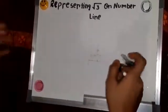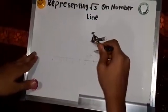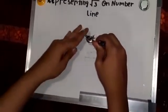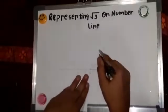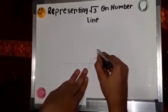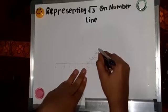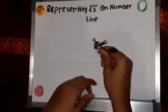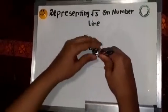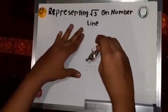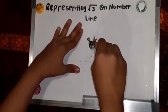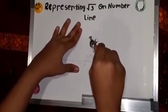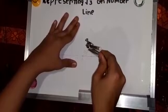Now we want to make root 3. So again we will take a perpendicular line from E. This point we will denote it as E and make a perpendicular line from E. So this is the perpendicular line.